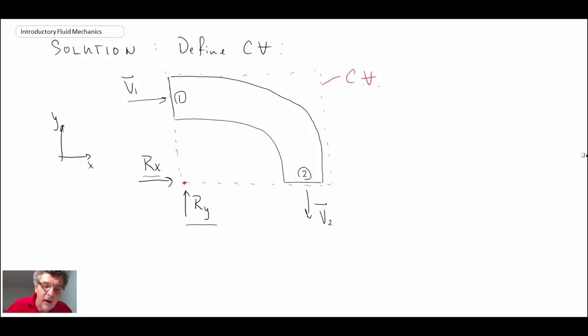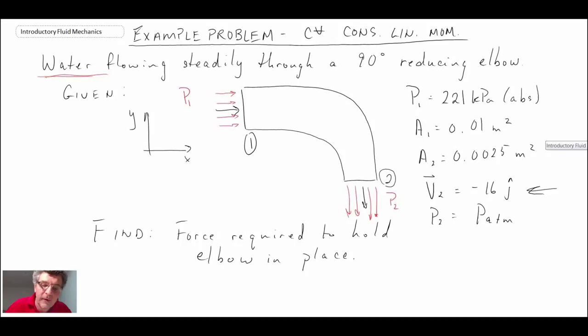So we're in part two of the example problem of solving for the reaction force on a reducing elbow, a 90 degree reducing elbow. I'll look back here. This was our problem statement.